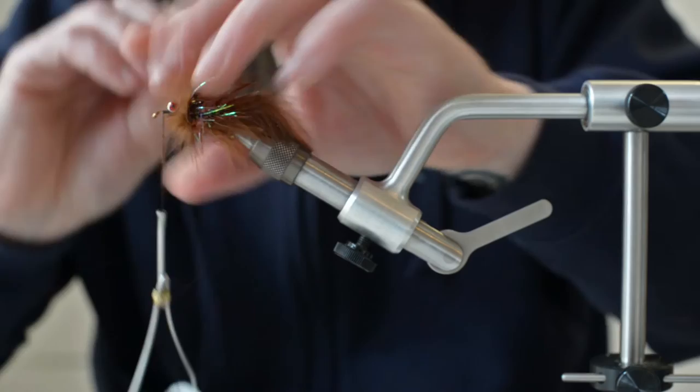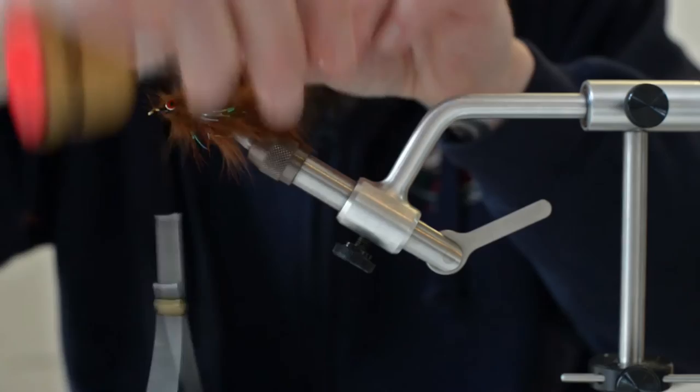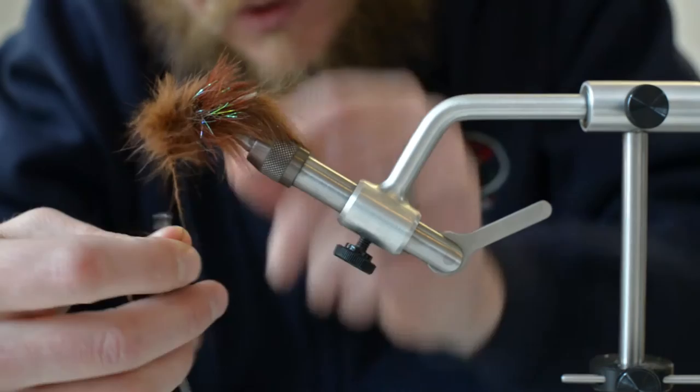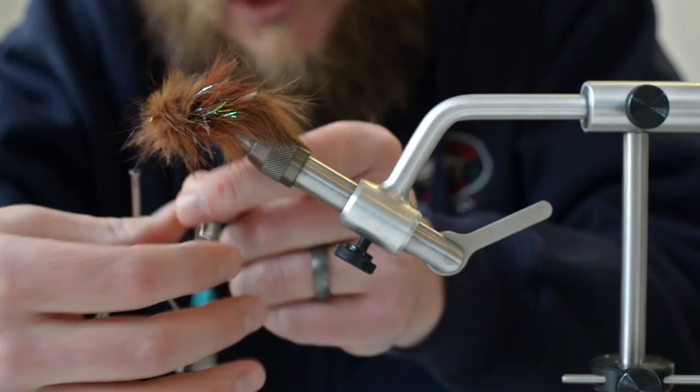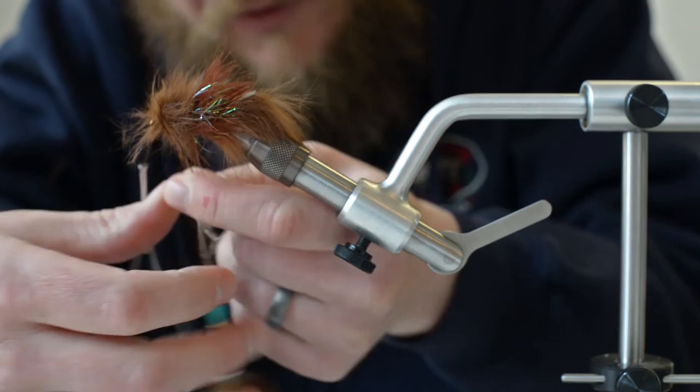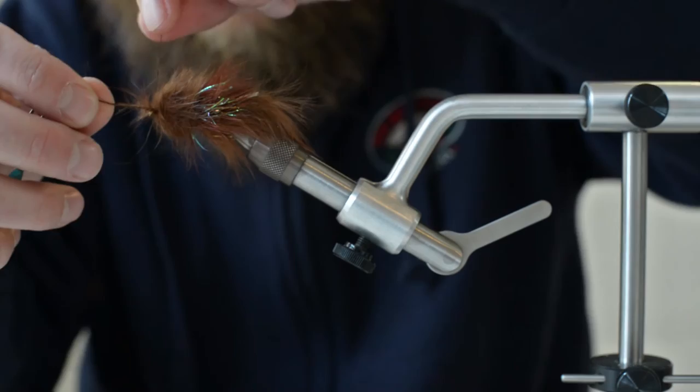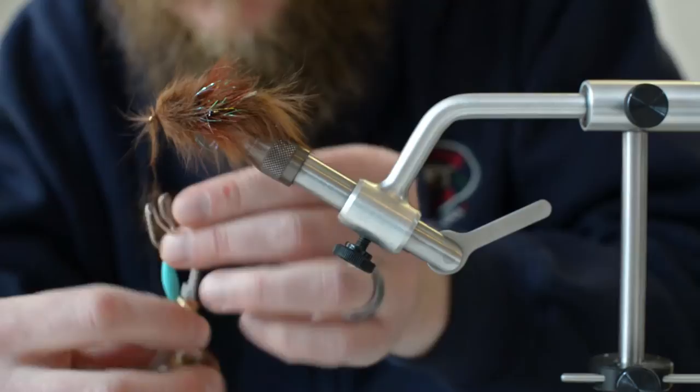So I build up a little collar behind my eyes there and then I'm going to figure eight around them. And then I should have just enough left to put one or two wraps in front of those eyes. Since you spend all that time putting the bunny fur in there, I like to try and use all of it. That's about as far as I can get. Tie that off two wraps.